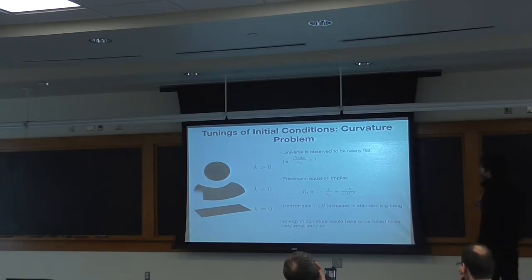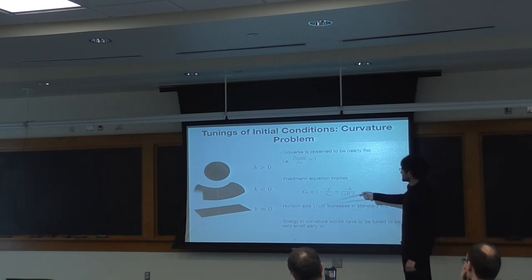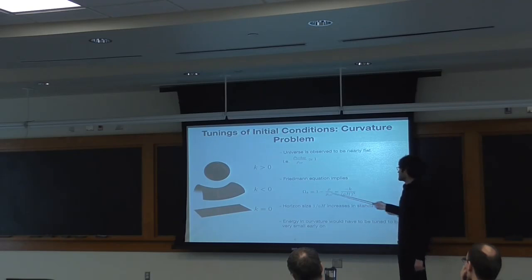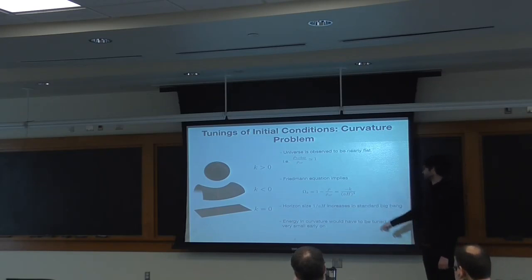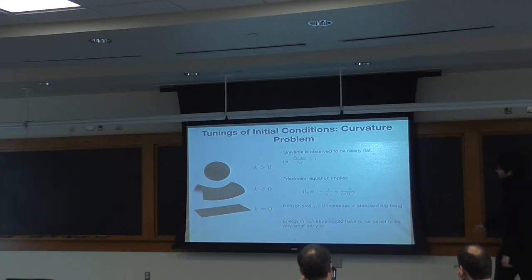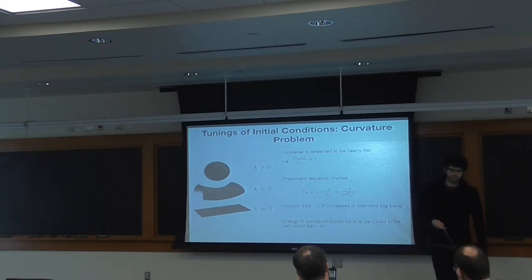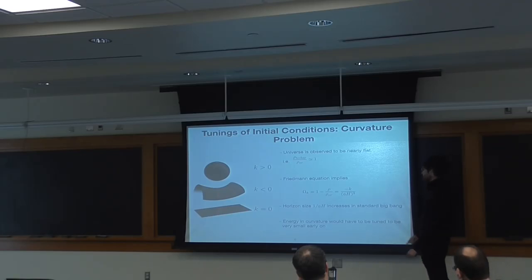The second Big Bang puzzle is what's known as the curvature problem: why is the spatial curvature of the universe observed to be so close to flat? This is puzzling because the Friedmann equation governing the evolution of the scale factor says that the energy density of curvature is directly related to the square of the horizon size AH, where A is the scale factor and H is the Hubble constant. In a standard Big Bang scenario, this horizon size just increases from the time of the Big Bang. That means that if the energy density of curvature is small today, it was even smaller earlier on. The question is, what physical mechanism drives this?